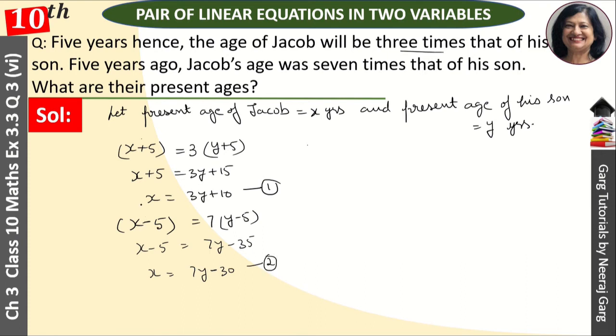Now from the first equation, we can put this value of x here, okay? So this becomes 3y plus 10, that is equal to 7y minus 30, right?